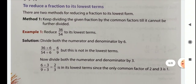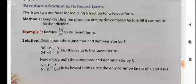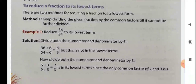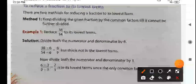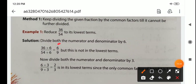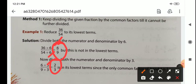Divide both the numerator and denominator by 6 — remember, you must divide by the same number. We get 6 by 9, which is not yet the lowest form. Then we divide by 3: 6 divided by 3 is 2, and 9 divided by 3 is 3. So we get 2 by 3, which is the lowest term.